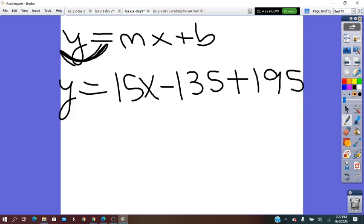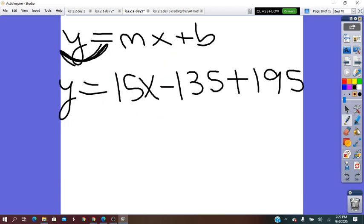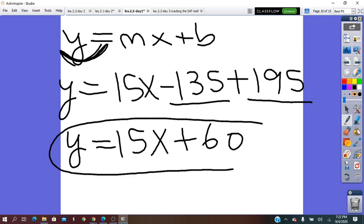So, it will be Y equals 15X negative 135 plus, it will be a plus 60. From this equation, I understand that per hour, they charge $15. And, this is the fee that they have to pay at the beginning.